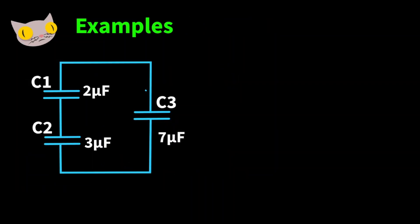So total capacitance is just C1 plus C2 plus C3 and so on. Now that we've talked about parallel and series capacitors, let's go through a few examples. We have a setup here where we have two capacitors in series and one over here that would be considered parallel. So first let's calculate these two series capacitors.